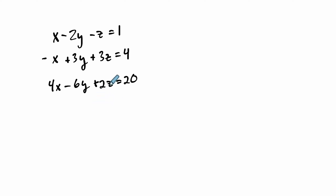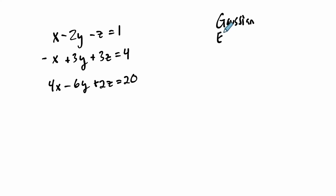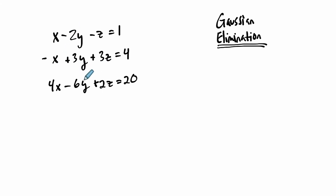We have a process called Gaussian Elimination. Gauss figured out a whole bunch of stuff about systems of equations, and he's done so much work in mathematics that we name many things after him. Gaussian Elimination allows us to manipulate our system so that it's easier to figure out the values of x, y, and z.